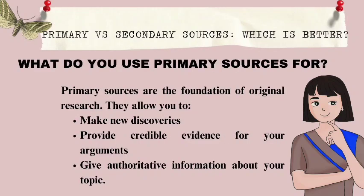Let us explore more about primary versus secondary sources — so which is better? Most research uses both primary and secondary sources. They complement each other to help you build a convincing argument. Primary sources are more credible as evidence, but secondary sources show how your work relates to existing research. Primary sources are the foundation of original research. They allow you to make new discoveries, provide credible evidence for your arguments, and give authoritative information about your topic. If you don't use any primary sources, your research may be considered unoriginal or unreliable.